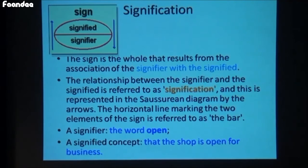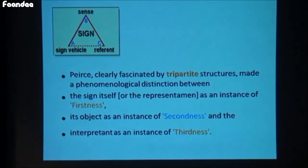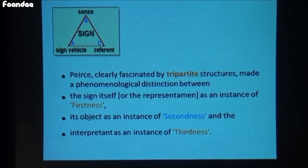One example here: the signifier is the word 'open' and the signified concept is that the shop is open for business. When the sign is there on the shop saying 'open', that signifies that the shop is open. This is a three-fold model which is more apt and most of the time we use this particular model because it is more accurate — it has sign vehicle, sense, and referent. These three components: there is a firstness, a secondness, and a thirdness in the way I look at that particular sign.